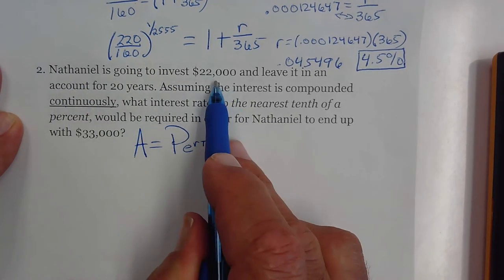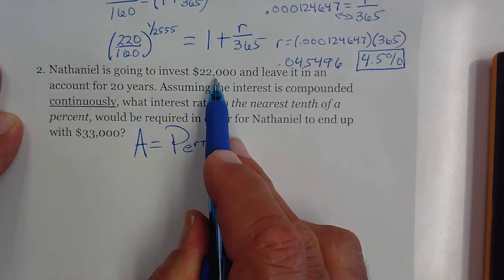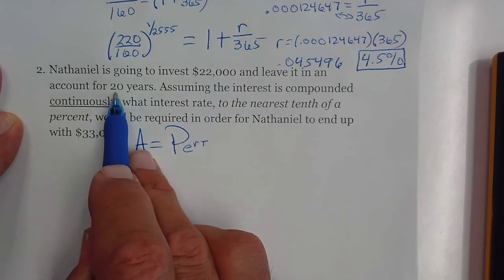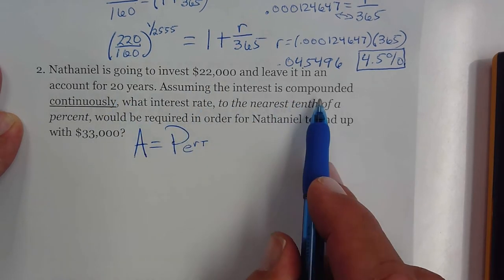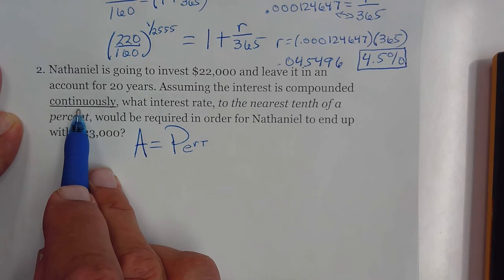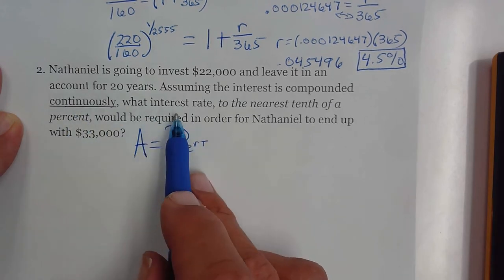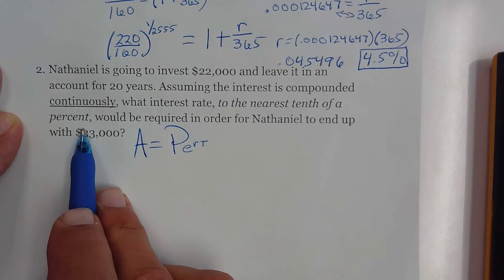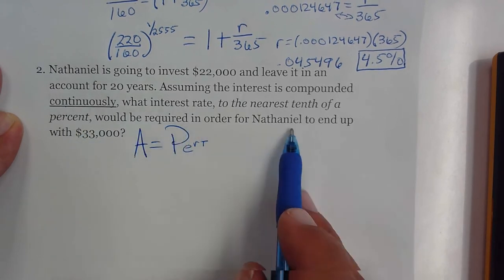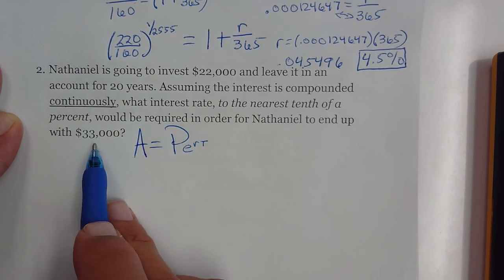This one says Nathaniel's going to invest $22,000, leave it in an account for 20 years, assuming that the interest is compounded continuously. What interest rate, to the nearest tenth of a percent, would be required in order for him to end up with $33,000?